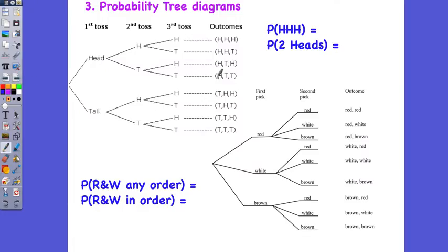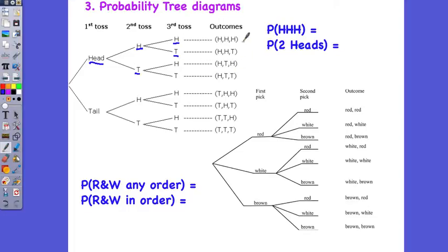Let's go further and look at a probability tree. Here I'm looking at the probability of tossing a coin three times. The first time I toss the coin, I can get a head or a tail. Then I toss the coin again — my chance of getting a head or a tail remains the same. Reading along the branches: head, head, head; head, head, tail; head, tail, head; tail, head, tail, head; and so on. There are eight outcomes all up. So what is the probability of getting head, head, head? Looking at all the outcomes, there's only one head-head-head out of a total of eight. Notice that I actually had to draw the tree out to determine this.